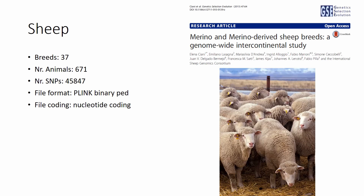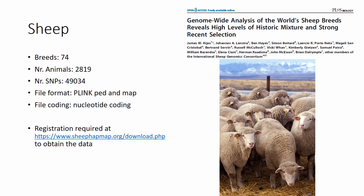The file format for that sheep dataset is binary PLINK with nucleotide coding. There is also a rather large sheep dataset published by the International Sheep Genomics Consortium in PLOS Biology — from 74 breeds, more than 2,800 animals, and almost 50,000 SNPs. The file format is PLINK PED and MAP with nucleotide coding. If you want to get this data there is a website called sheephapmap.org with a download section where you fill out a small request form to obtain the data.